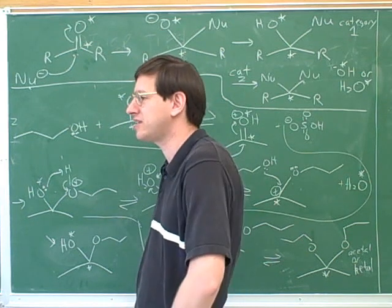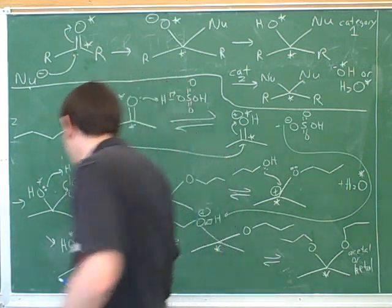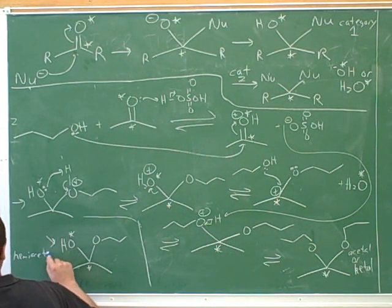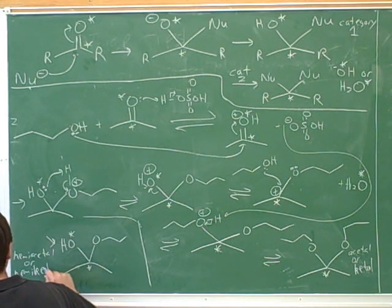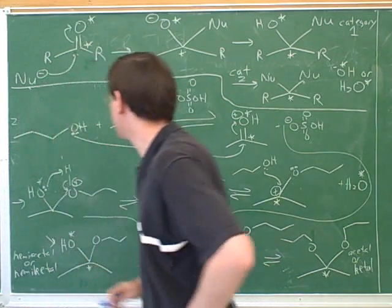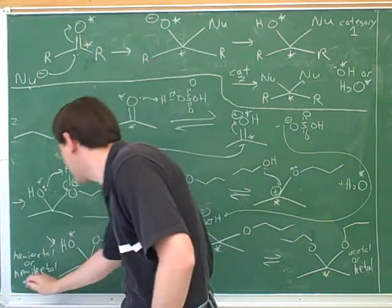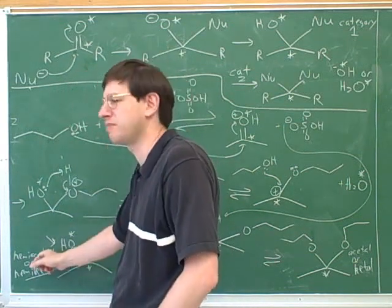And what were you saying? What would be the name for this? Hemiacetal. Yeah. Hemiacetal or hemiketal? Ketal. That's right. That's right. So at this point, we would get either a hemiacetal or a hemiketal. In this particular case, we're attached to two carbon chains because we came from a ketone. So in this case, we have a hemiketal. But if we had started with an aldehyde, we would have a hemiacetal.